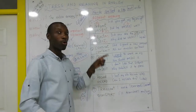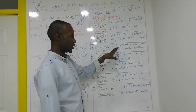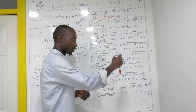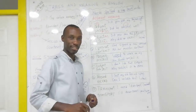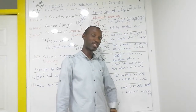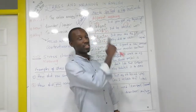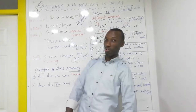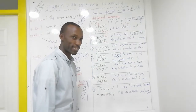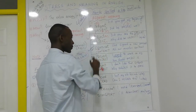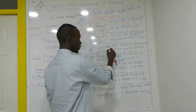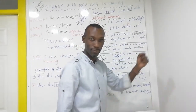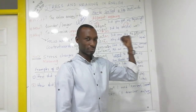The third word is 'contract.' She signed a new CONtract — the stress is on the first syllable, so it's a noun. Ronaldo signed a new contract. I have a new contract. Now the verb: our muscles conTRACT. The stress shifts to the second syllable.